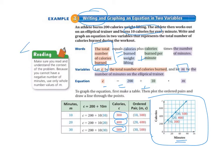And let's take a look at the box off to the left. It says, make sure you read and understand the context of the problem. Because you cannot have a negative number of minutes, use only whole number values of M. That's good advice.